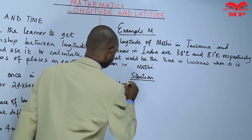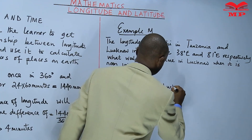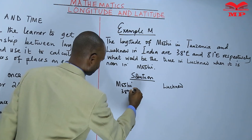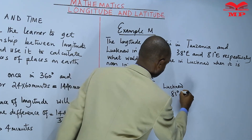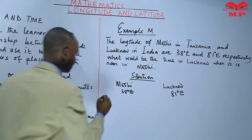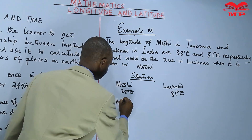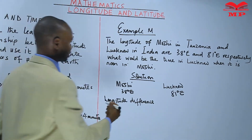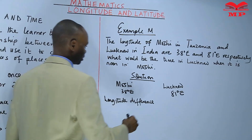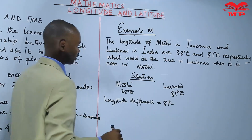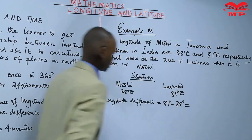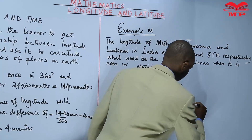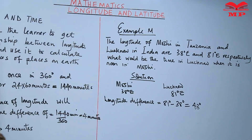Going straight to the solution: Moshi is at 38 degrees East and Lucknow is at 81 degrees East. Since they are both on the east side, we simply find the difference. Lucknow is more easterly, so its time will be ahead. The longitude difference is 81 degrees minus 38 degrees, which gives a longitude difference of 43 degrees.